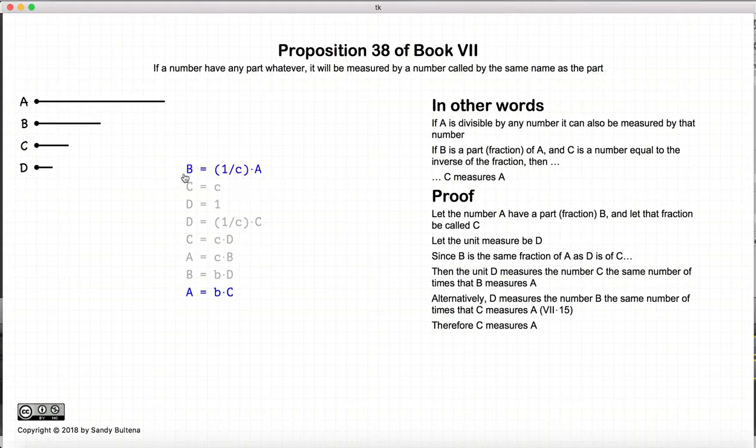So thus we have shown, if B is a fraction of A, and that fraction is represented by the number C, then C will also measure A. And that's it for this proof.